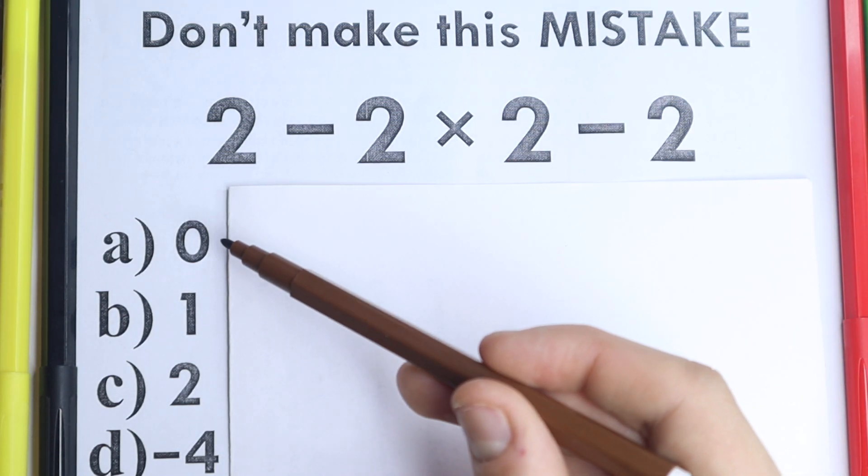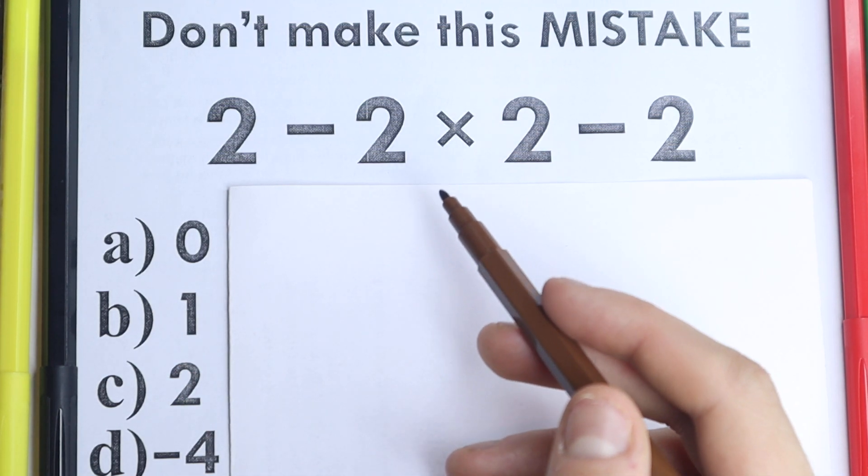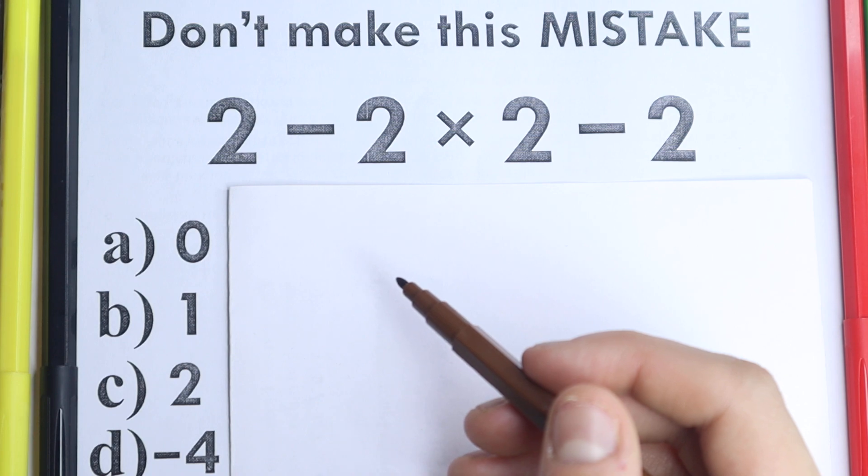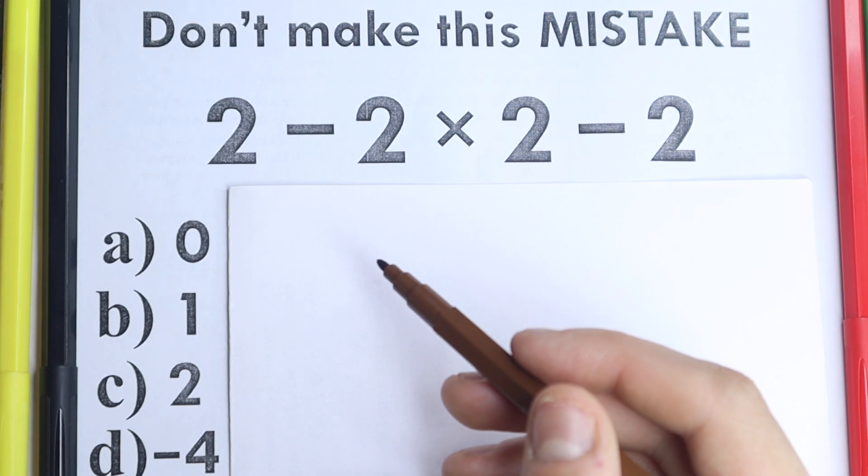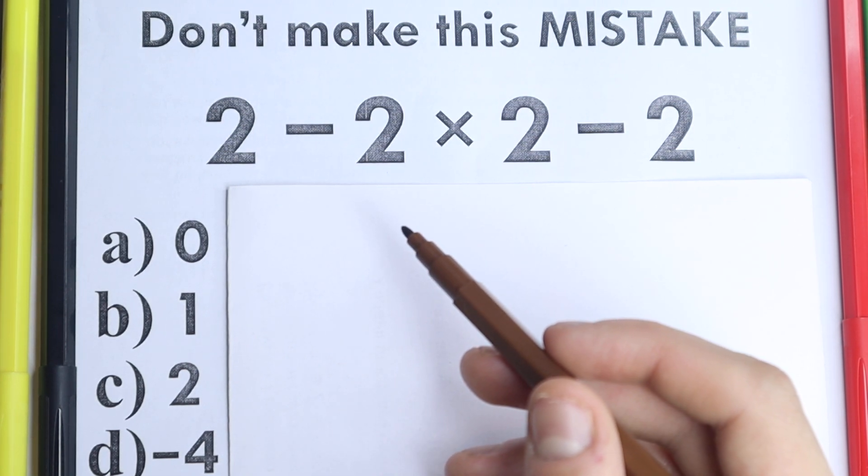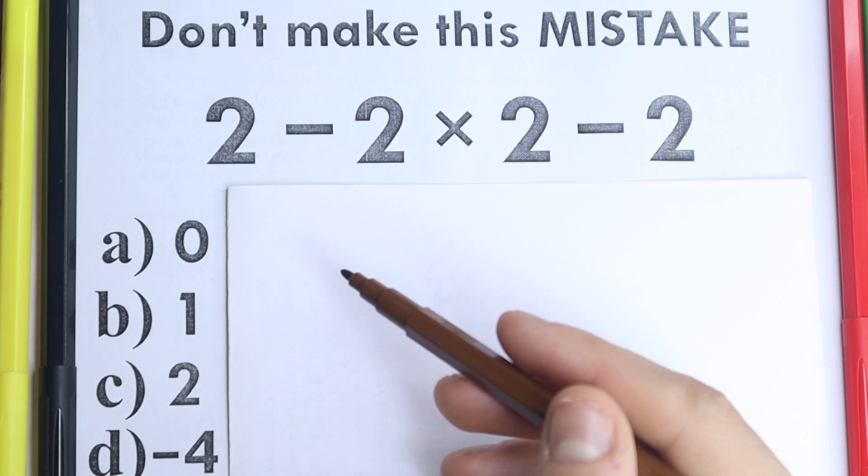Right here we have options: option A, option B, C and D, four options. So right now I suggest you to pause the video and try to solve it by yourself. It is really interesting and very tricky and I hope your answer will be the same as mine. I'm going to solve this question in one minute, so I want you to choose an option and we will check our answers in 30 seconds.